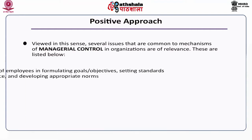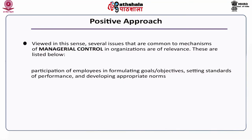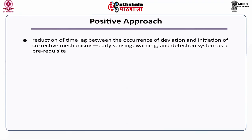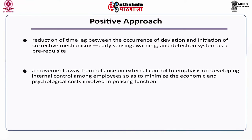Several issues common to managerial control mechanisms are relevant here. These include: participation of employees in formulating goals, objectives, and standards; psychological acceptance of the above by all employees; agreement on methods of evaluation and determination of deviation; reduction of time lag between occurrence of deviation and initiation of corrective mechanisms; early sensing, warning and detection systems as a prerequisite; a movement away from reliance on external control towards developing internal control among employees to minimize policing costs; and lastly, output orientation versus procedure or time orientation.